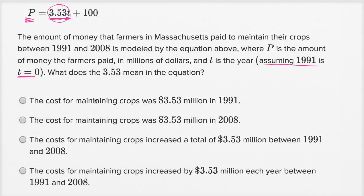So let's see which of these choices are consistent with what I just said. The cost for maintaining crops was 3.53 million dollars in 1991. No, that's just not true. In 1991, this term is zero, and it was 100 million dollars. The cost for maintaining crops was 3.53 million in 2008.